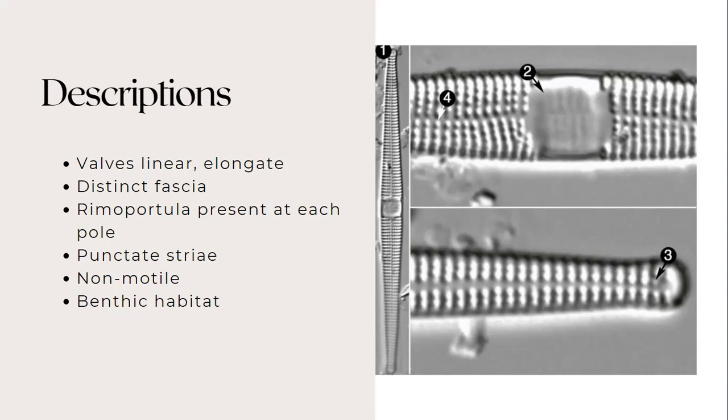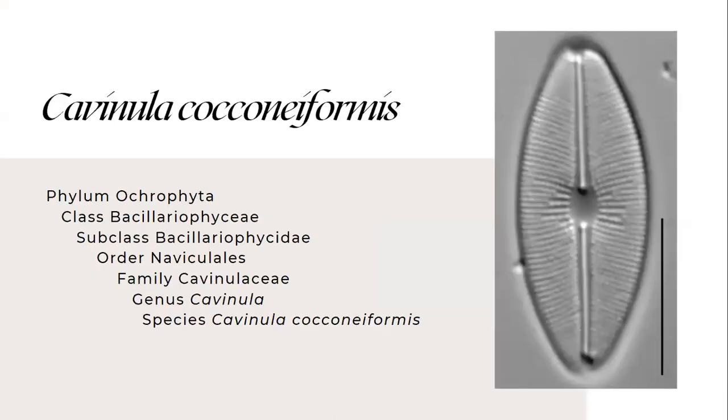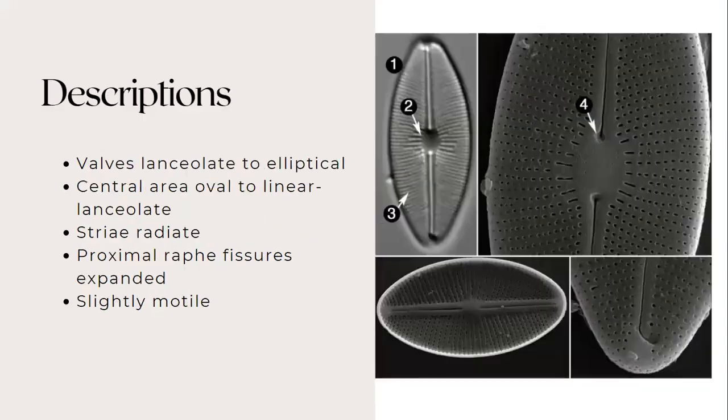Then we have the species Cavinula cocconeiformis from the family Cavinulaceae. For its description, the valves are lanceolate in larger specimens to elliptical at the small end of the size range. The apices are not narrowly to broadly rounded.